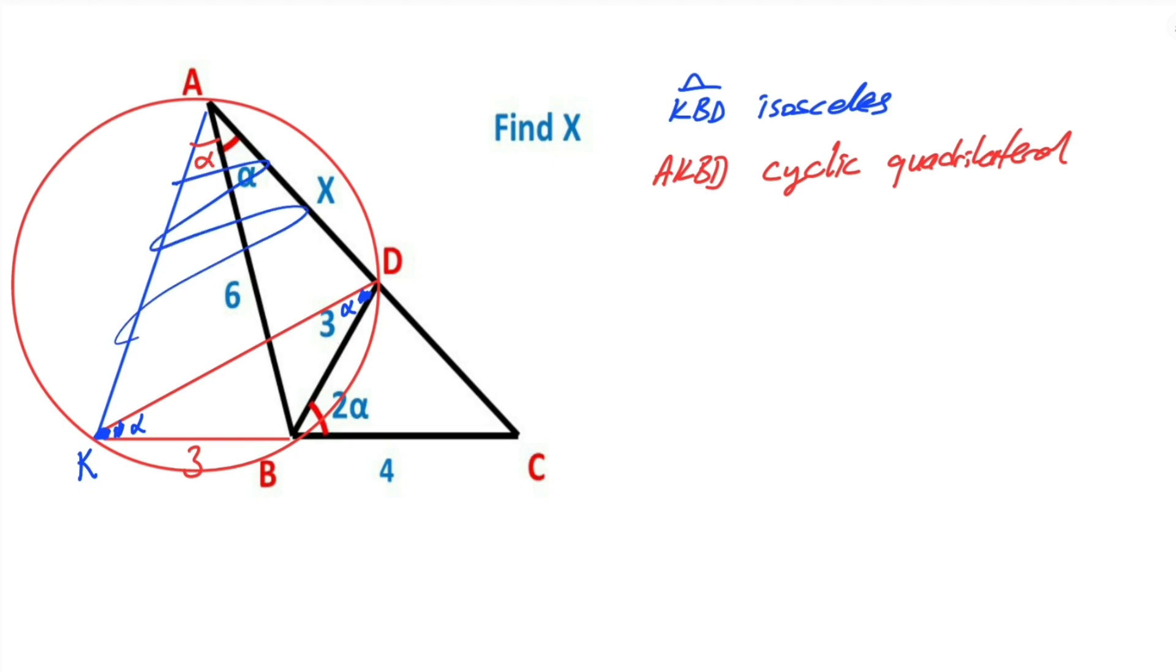And then if you focus on AKC triangle, we have a bisector line. AB is a bisector line.